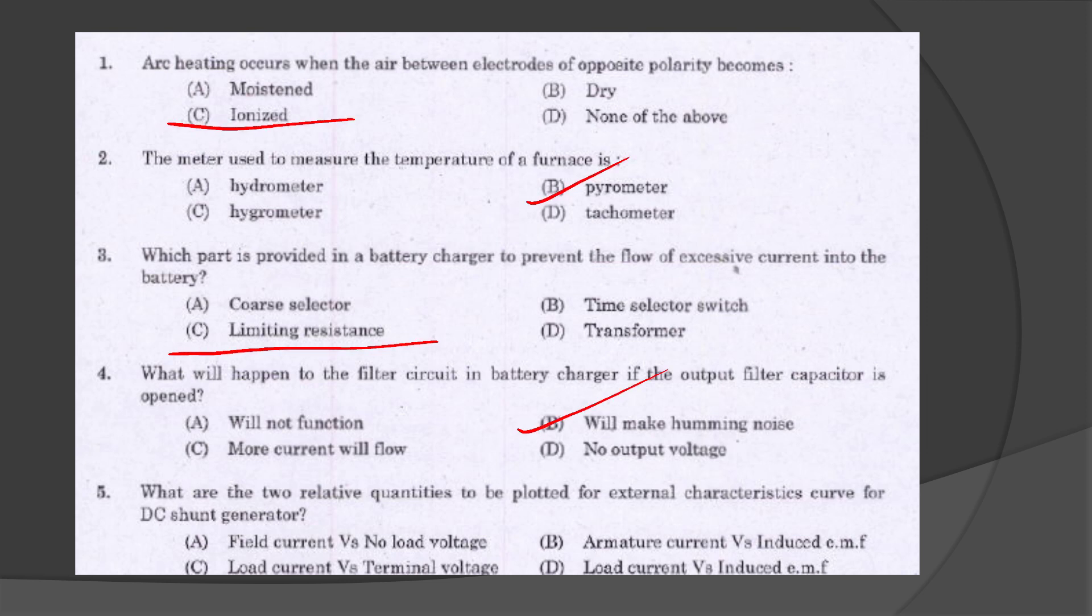Battery charger filter circuit will make a humming noise. What are the two relative quantities to be plotted for external characteristics curve for DC shunt generator? This is the load current versus terminal voltage.